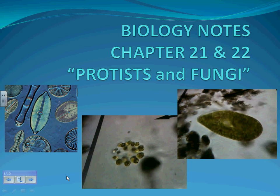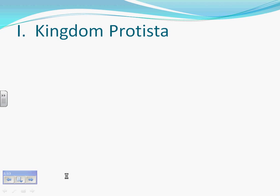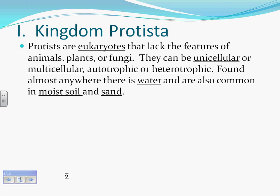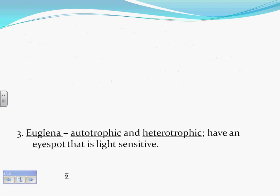Biology notes, chapter 21 and 22: protists and fungi. Kingdom Protista — protists are eukaryotes that lack the features of animals, plants, or fungi. They can be unicellular or multicellular, autotrophic or heterotrophic, found almost anywhere there is water, and are also common in most soil and sand.